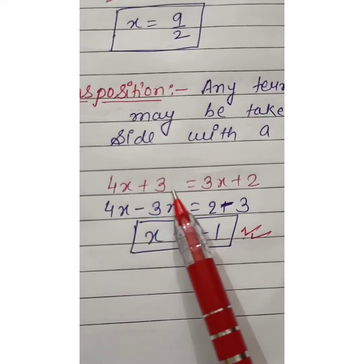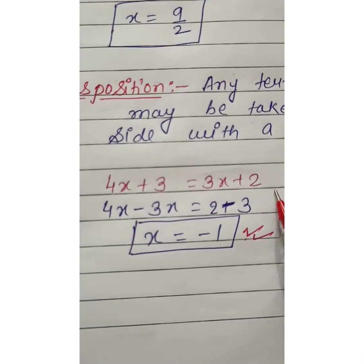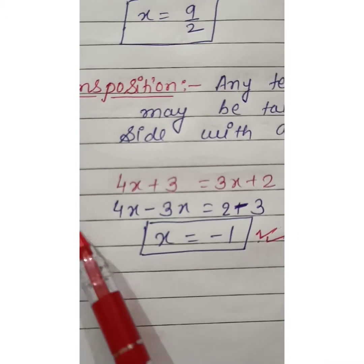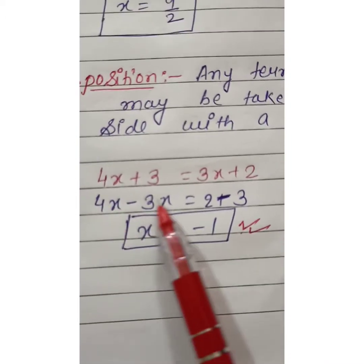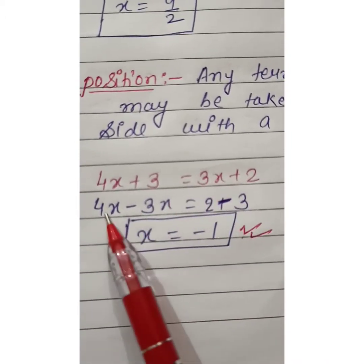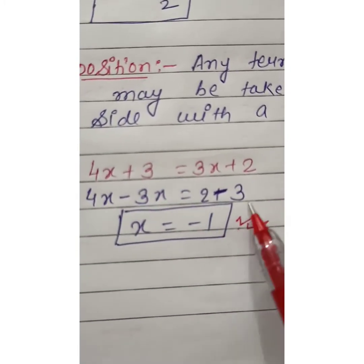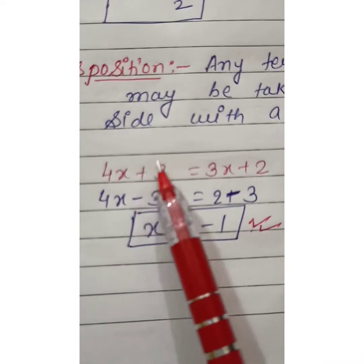In transposition we take one equation to the other side and change its sign. Here it's written 4x plus 3 equals 3x plus 2. We transpose the variable x terms to one side. 4x, and plus 3x comes to left side it becomes minus 3x.